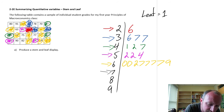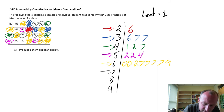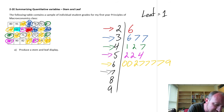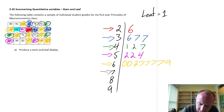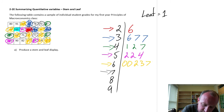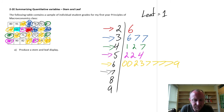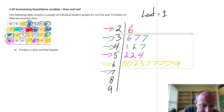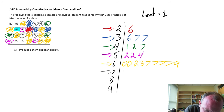Moving on, for stem 7 I have 70, 78, 77, and 75. I also notice I missed a 63 earlier, so I can add that in to the 6 row. And just to note: for the 6s I had four 7s and a 9. For stem 7, the leaves in order are: 0, 5, 7, and 8.